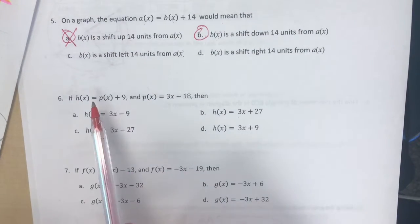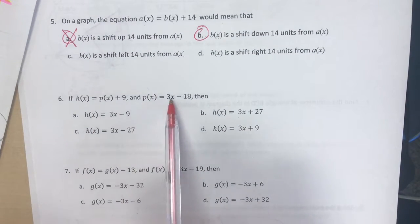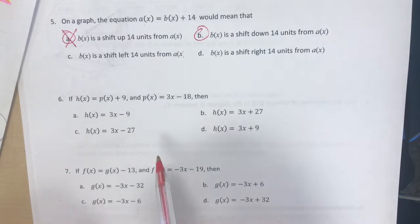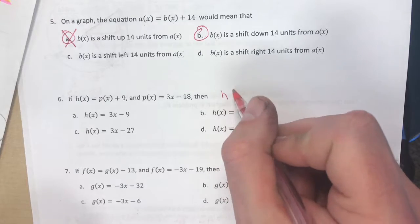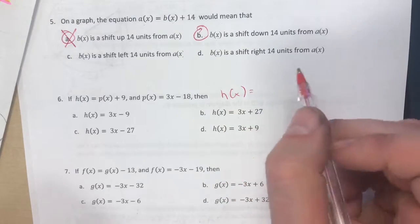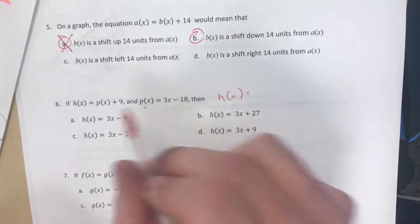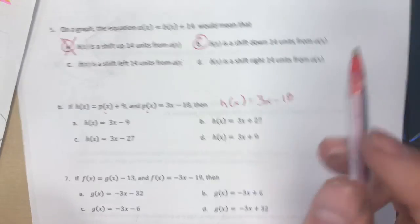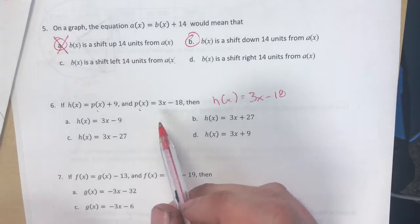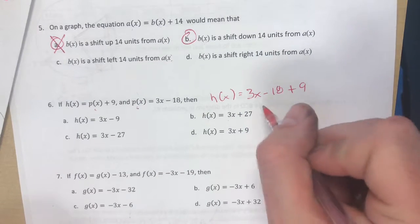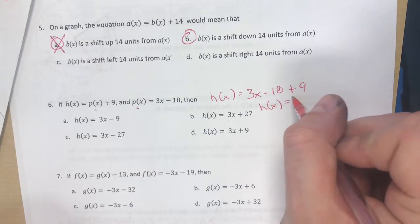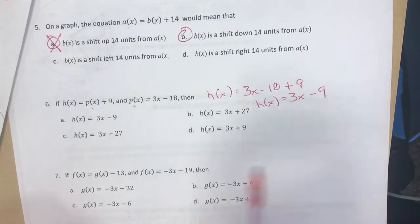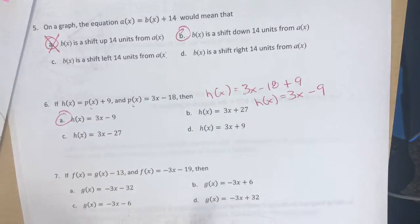Number 6, if h(x) equals p(x) plus 9 and p(x) is 3x minus 18, then h(x) is one of these things. So h(x) would have to equal p(x), which is 3x minus 18, plus 9. So h(x) is equal to 3x and then combine those two for minus 9. So that one is a.